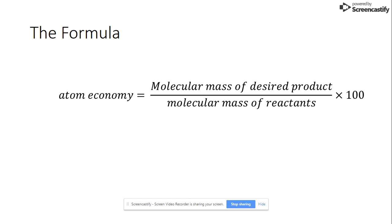Atom economy as a percentage is equal to the molecular mass of the desired products divided by the total molecular mass of all of the reactants and you multiply that by 100.